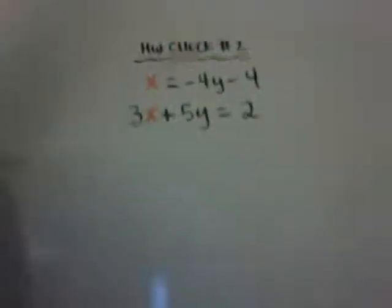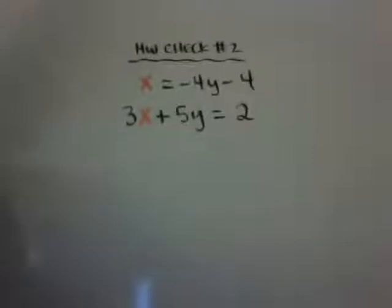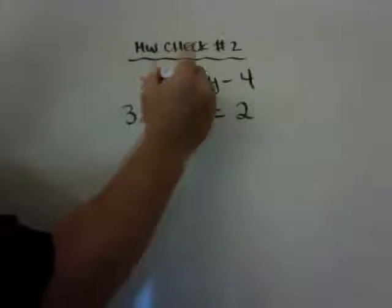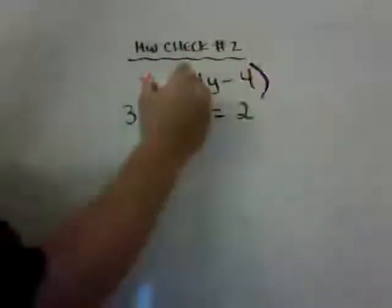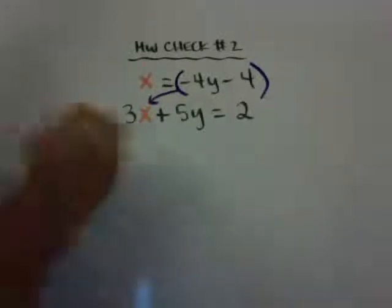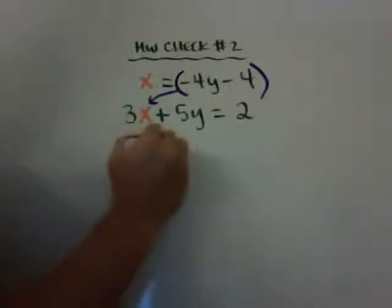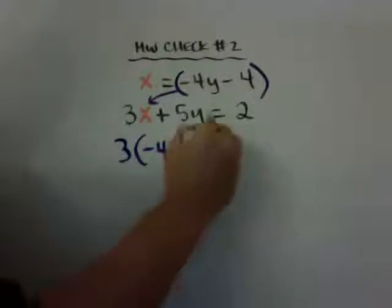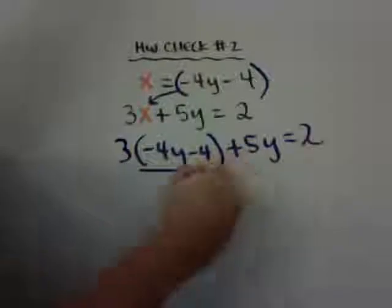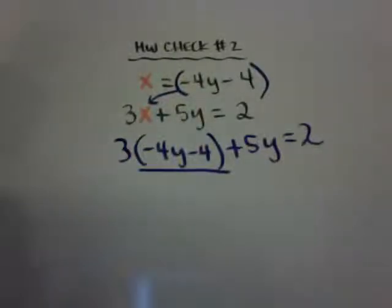Here's your homework check number 2. I tried to color code it for you already. Make sure you take the expression in parentheses, put it into there, and then rewrite it and go. I'll even set it up for you: negative 4y minus 4 plus 5y is equal to 2. There's your substitution — instead of x, you write that. Go ahead and solve it, make sure it's in coordinate form, and do your homework check before class starts. Take care.